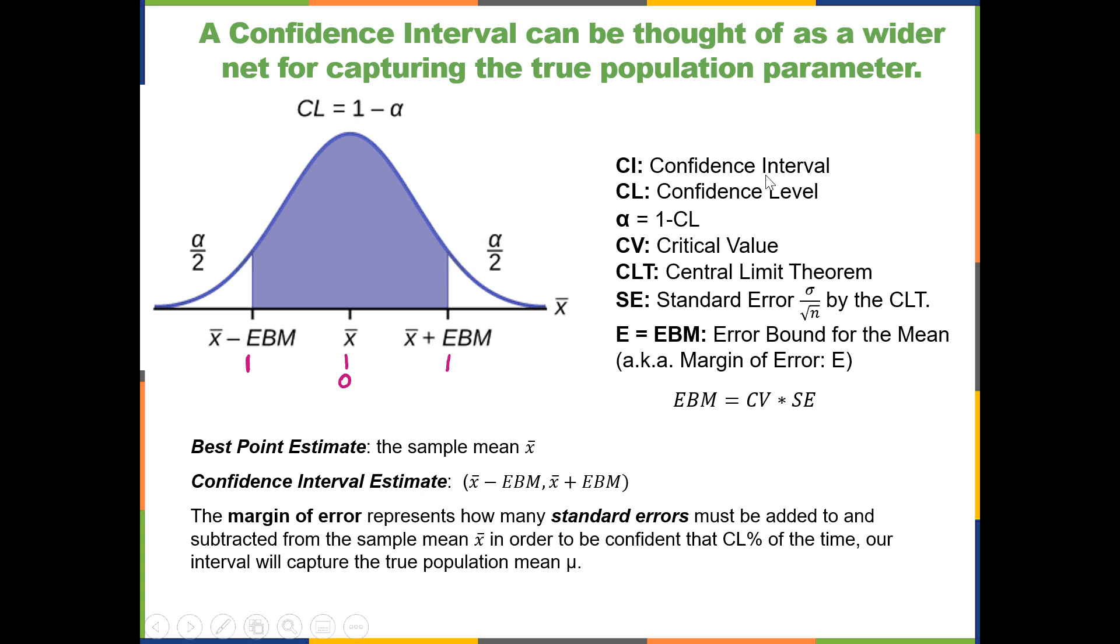First of all, CI stands for confidence interval. CL stands for confidence level. Alpha is equal to 1 minus the confidence level. CV stands for critical value. CLT is the central limit theorem.